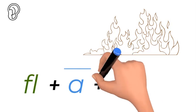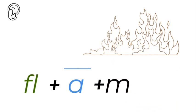A, we can hear there's a M. Now if we leave it like that, that actually says flam. So to turn that A into an A, you put the magic E. There you go. Fl, A, M. Flame, not flam.